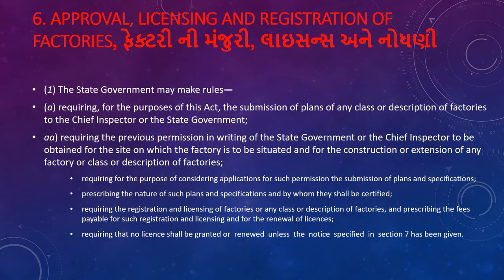Section 6 covers the approval, licensing, and registration of factories. The state government makes rules requiring, for the purpose of this Act, submission of plans for new factories or extensions. The government is able to prepare and review new plans as part of the Act's requirements.